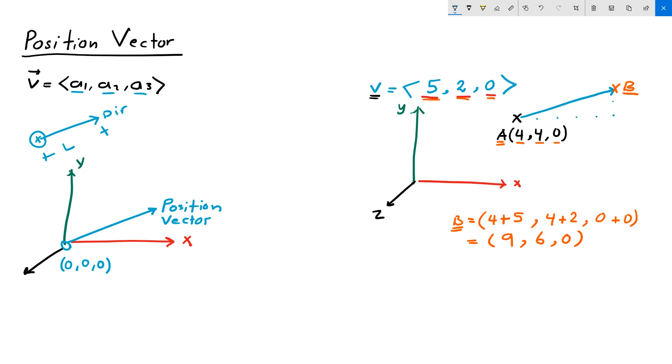If I anchor my vector v to the origin, which has coordinates 0, 0, 0, as you know, the vector might look like that. This is the position vector of vector v.